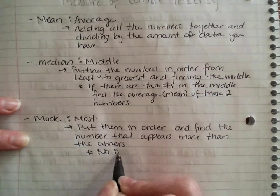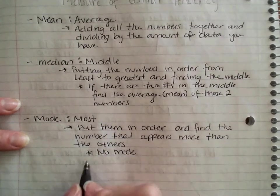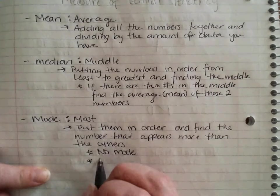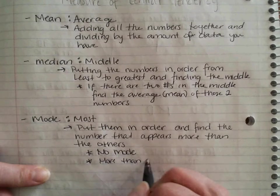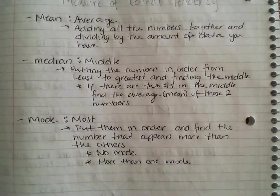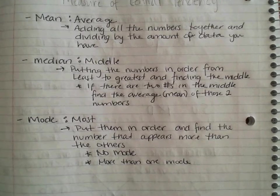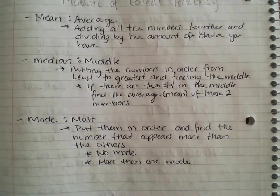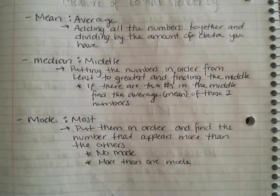It is possible to have no mode where no number appears more than the others. And there is the possibility to have more than one mode. Generally you don't have more than three different numbers that appear more than others. So anytime you have more than three modes, generally we just say no mode. Nothing appears more than the others.